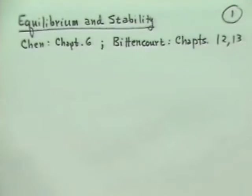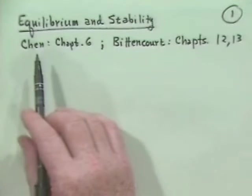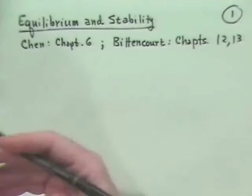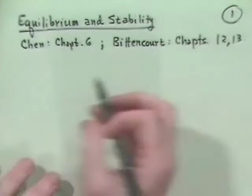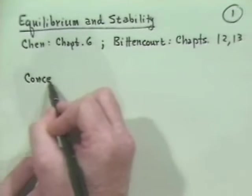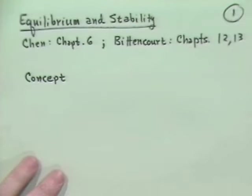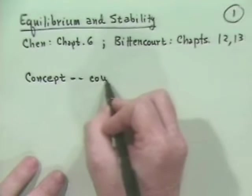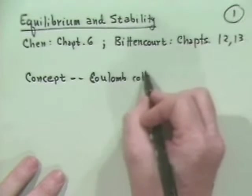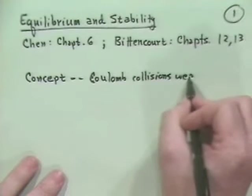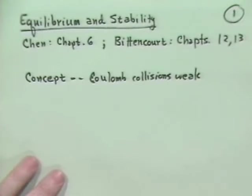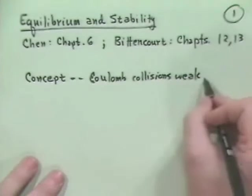The basic idea is that we're going to be talking about so-called plasma equilibrium and stability. The basic concept is that ordinarily, if a plasma was out of thermodynamic equilibrium, we could rely upon Coulomb collisions to relax it back. But Coulomb collisions are slow, so what the plasma does is it gets kind of impatient as a collisionless plasma and it develops collective instabilities.